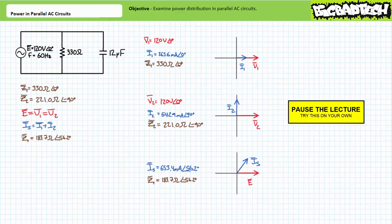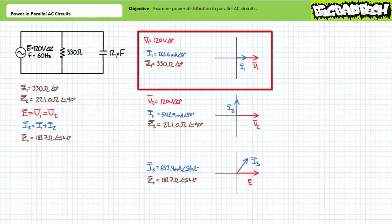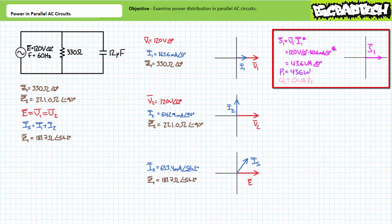If you're tracking, you should have obtained the following results. Current through the resistive element Z1 is in phase with the voltage across it, and there exists a relative phase shift of zero degrees between voltage and current. For this purely resistive element, we should anticipate all of apparent power to be directed towards real power and none towards a reactive interchange. Apparent power is the complex conjugate of voltage times current. Substituting in our given values, we arrive at an apparent power figure of 43.6 volt amperes at an angle of zero degrees. Resolving this into its real and reactive components demonstrates the resistor is directing 43.6 watts towards real power and zero vars towards a reactive interchange.